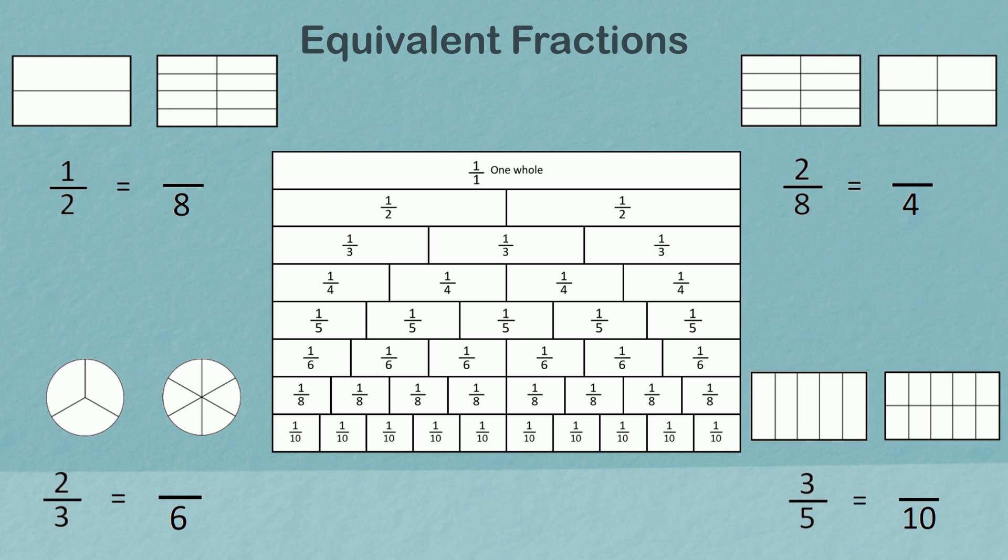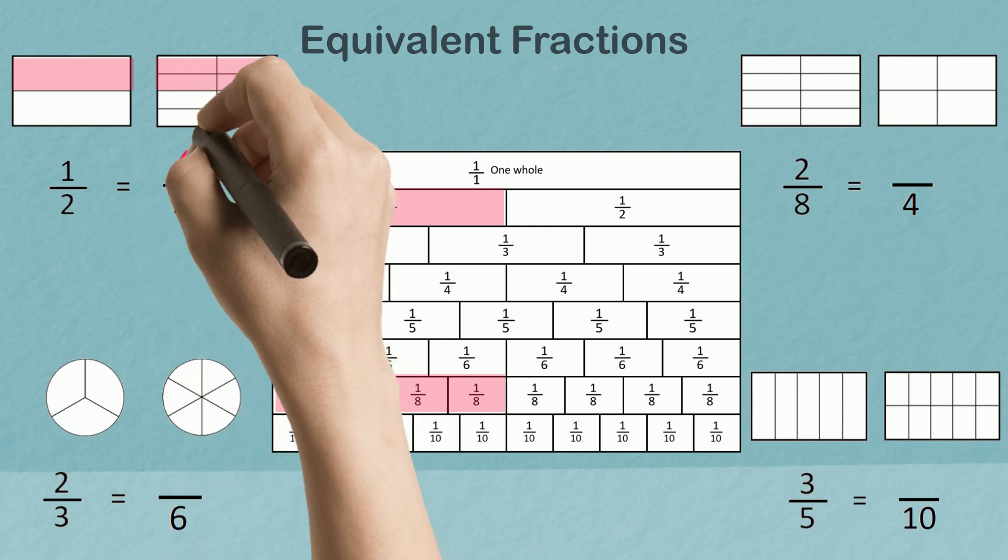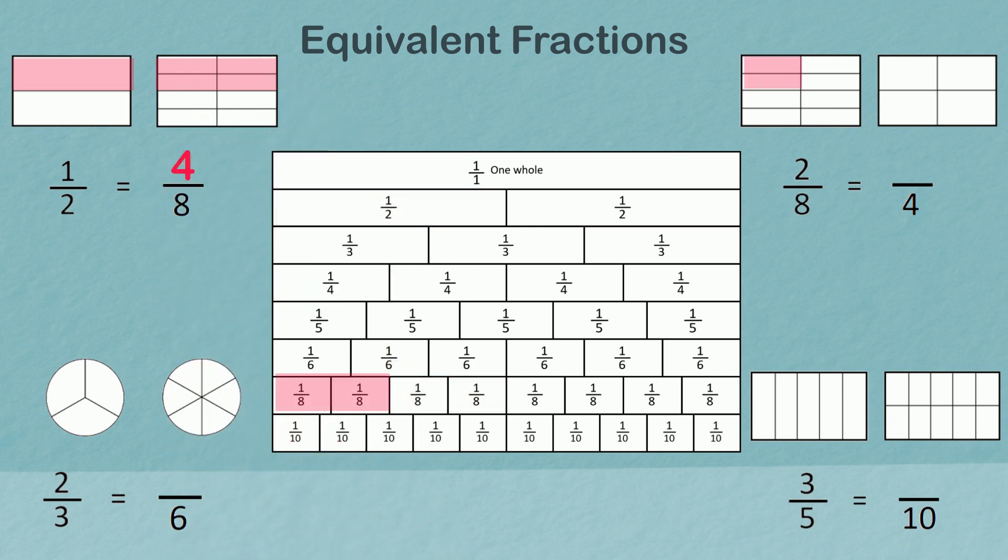Let's see how you went. One half is equivalent to four eighths. Two eighths is equivalent to one quarter. Two thirds is equivalent to four sixths. Three fifths is equivalent to six tenths.